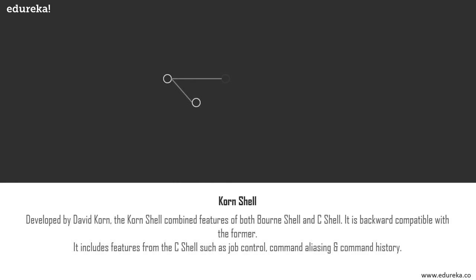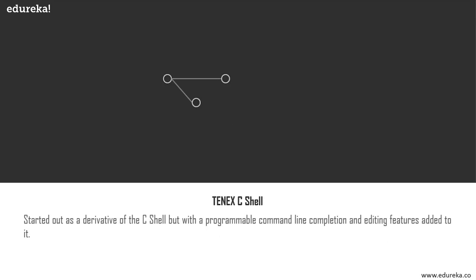Another improvement on the Bourne shell was the Korn shell in 1983, developed by David Korn of Bell Labs as a comprehensive combined version of the major shells present at that time. The initial development was based on the Bourne shell source code. The Korn shell is backward compatible with the Bourne shell and includes many features of the C shell, and complies with POSIX 2 shell and utilities. Major differences include job control, command aliasing, and command history, designed after the corresponding C shell features.